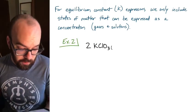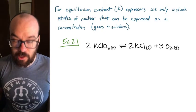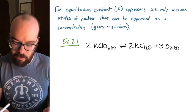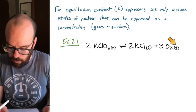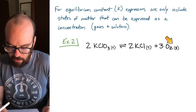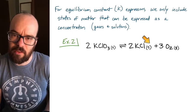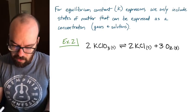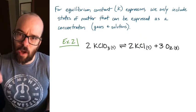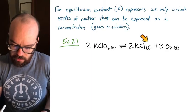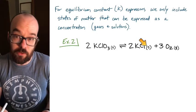Our next example: two potassium chlorate solid decomposes into two KCl solid plus three oxygen gas. For gases, we can express concentration as moles divided by volume. Solids, though, we never talk about in terms of concentration — we talk about solids in terms of amounts, like 10 grams of a solid. So when writing equilibrium expressions, we won't include solids because we have no concentration to substitute in for our K-value.